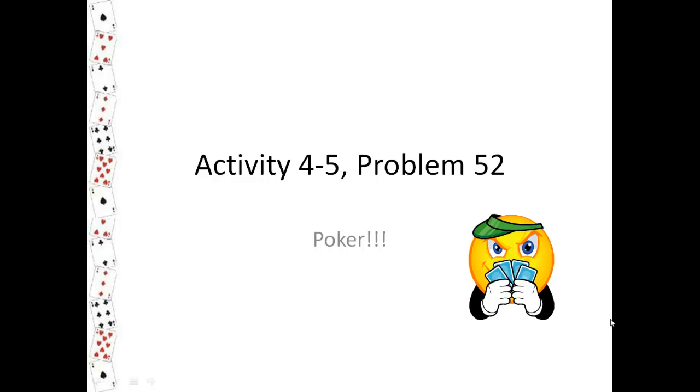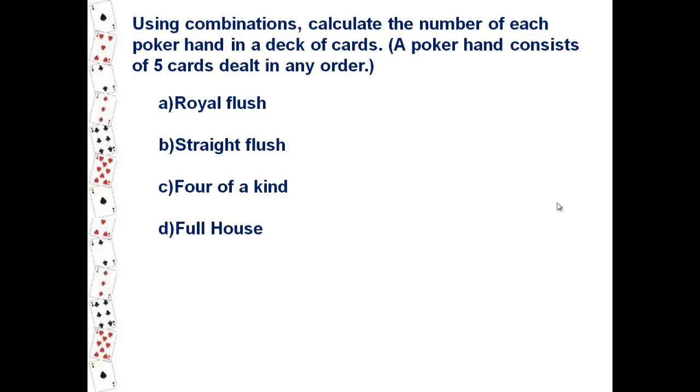Here we are with Activity 4-5, and you finally got to problem 52 and got stumped. Don't feel bad. I thought this was a confusing problem too, especially since we've been doing problems like: if you draw one card and then another, what's the probability you'll get two aces in a row or something like that.